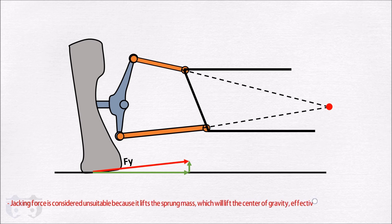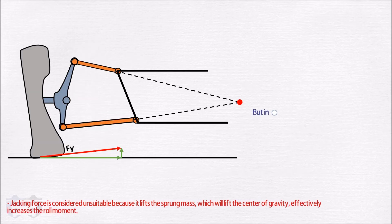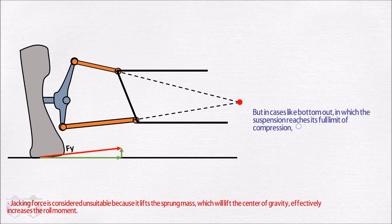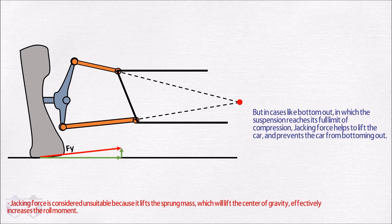Jacking force is considered unsuitable because it lifts the sprung mass which will lift the center of gravity, effectively increasing the roll moment. But in cases like bottom out in which the suspension reaches its full limit of compression, jacking force helps to lift the car and prevents the car from bottoming out. So while designing a suspension geometry the roll center should be kept near to the center of gravity and also near to the ground to avoid the excessive jacking force.